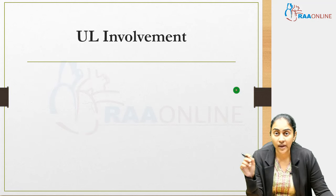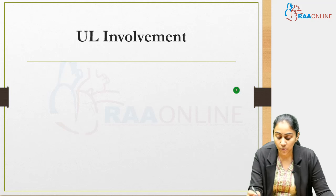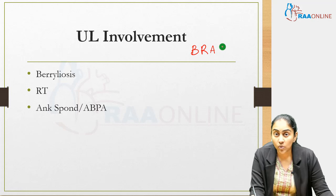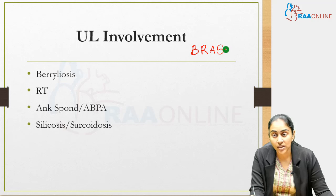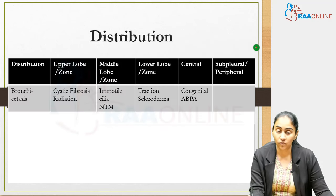In pulmonology, it is important to remember the handful of diseases with upper lobe involvement — the vast majority have lower lobe involvement. A useful mnemonic is BRASH: B for berylliosis, R for radiation, A for ankylosing spondylitis and ABPA (allergic bronchopulmonary aspergillosis), S for sarcoidosis and silicosis, H for hypersensitivity pneumonitis. TB also has upper lobe involvement.